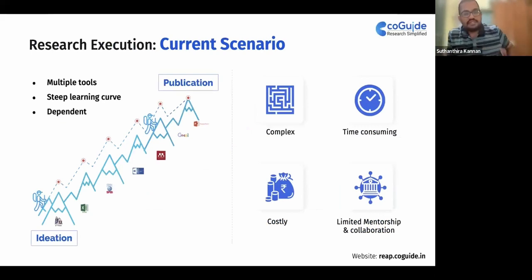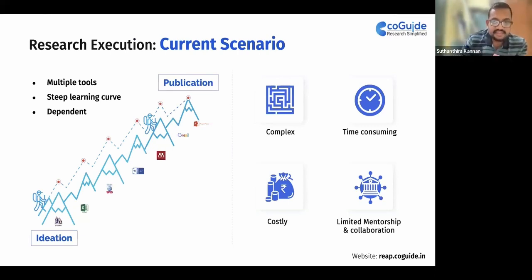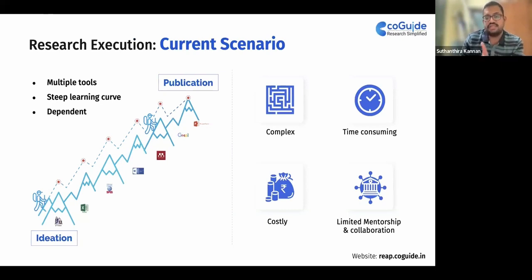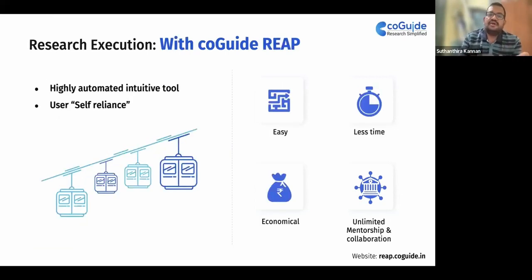The current scenario is that multiple tools are required, each with a steep learning curve, and one tool is dependent on another. For example, with SPSS, you can do direct entry, but it is better to first enter data in Excel and then load it into SPSS. This makes the process complex, time-consuming, costly, and limited in collaboration — many guides may not even be familiar with all this software.